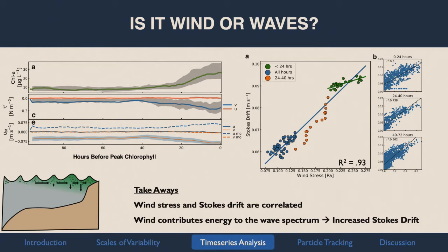Looking at the time course: before 40 hours it's just ambient conditions. From 40 to 24 hours there's a real ramping up in wind stress, followed by an increase in Stokes Drift. Between 20 hours and the peak — when we have the strongest rate of rise in chlorophyll — it starts to mellow off. And to show this isn't just an artifact of the average state, this is all the raw data for those time periods, and these correlations still stand up.